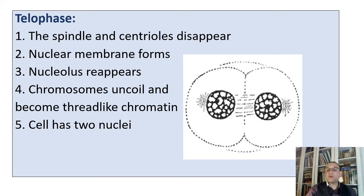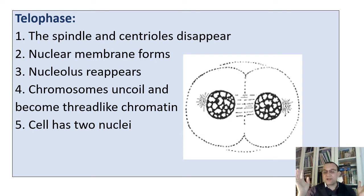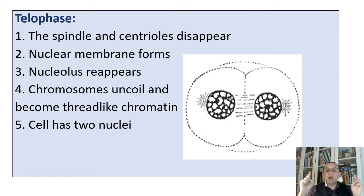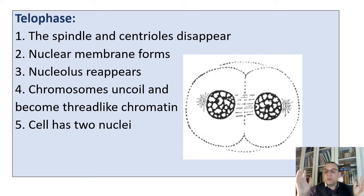The last stage of mitosis is called telophase, and everything here happens opposite to prophase. The spindle and centrioles disappear. The nuclear membrane forms around each new mass of chromosomes, and the nucleolus reappears. The chromosomes uncoil and become thread-like chromatin again. Now the cell has two nuclei — we refer to that cell as a binucleated cell.